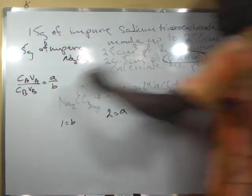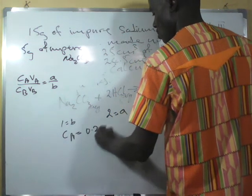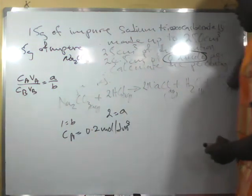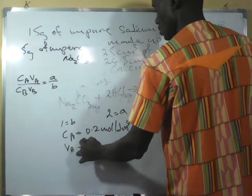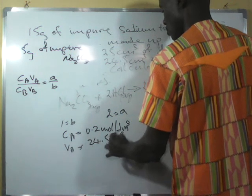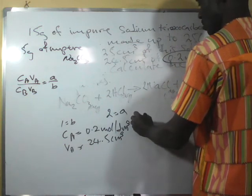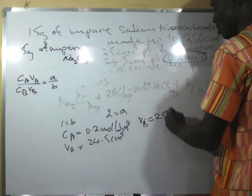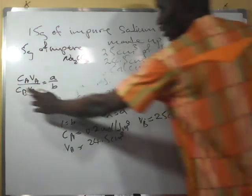The concentration of the acid is 0.2 mol/dm³. The volume of the acid, Vₐ, is 24.5 cm³. The volume of the base — sodium trioxocarbonate — Vb is 25 cm³, according to the question.